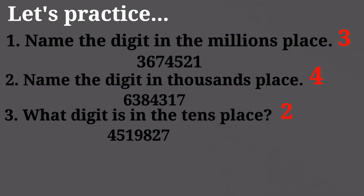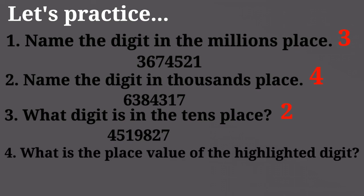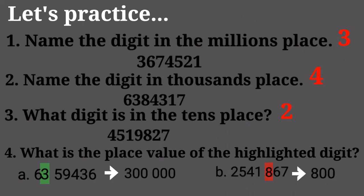Number 4: What is the place value of the highlighted digit? Option A: 300,000. Option B: 800.